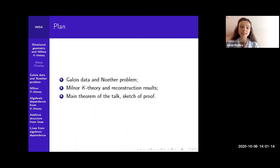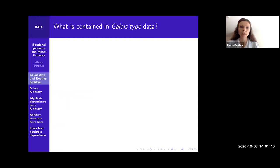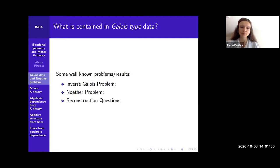Here is the plan. I'll start by recalling the classical Noether problem and the questions. Then I'll explain how Milner K-theory arises in this context. Then I'll discuss some reconstruction results and I will also talk about some details of proofs. The classical question is to know what can be determined by Galois type data. This includes in particular the inverse Galois problem, the Noether problem, and other reconstruction questions.